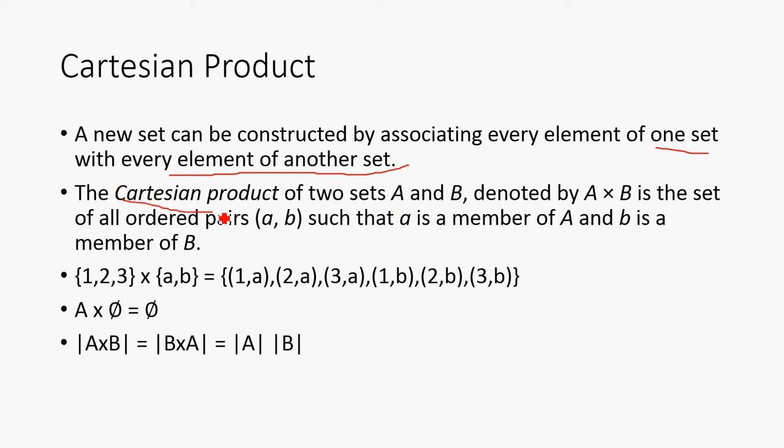So, let's consider a few cases. A cross the empty set is going to be the empty set, and the cardinality of A cross B is going to be the same as the cardinality of B cross A, and that's just going to be the product of the cardinalities of each set.